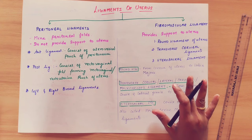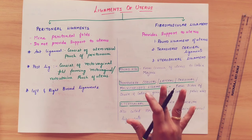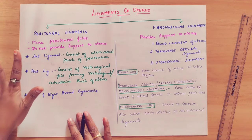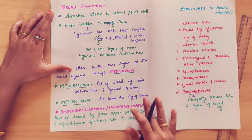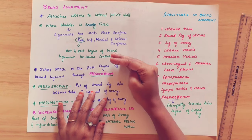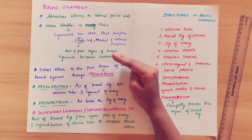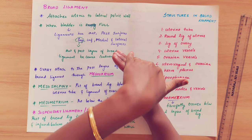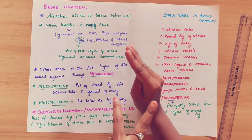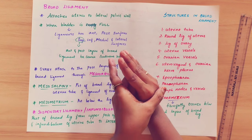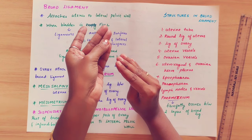This is all about the fibromuscular ligaments — these provide detailed support to the uterus. Now, the broad ligament is one of the important peritoneal ligaments. It has two layers: an anterior layer and a posterior layer. These two layers join at the fundus of the uterus and attach the uterus to the lateral pelvic wall.